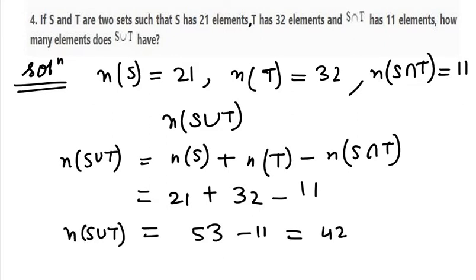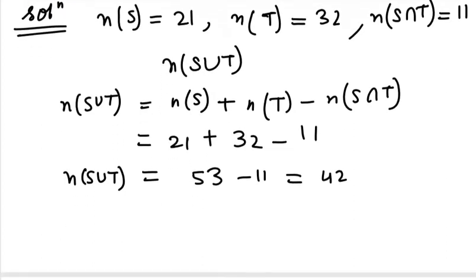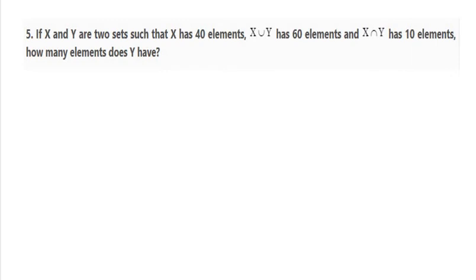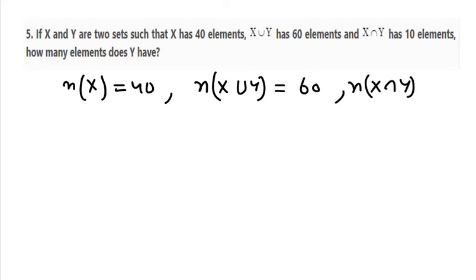Now the next question is question number 5. It says if X and Y are two sets such that X has 40 elements, therefore we have n(X) as 40, and then we have X union Y which is 60. Then we have n(X∩Y) equals 10. Now we need to find the number of Y elements.